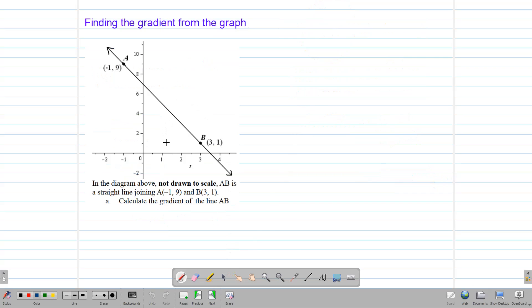Here in this question, we are asked to find the gradient of the line segment AB. All right, so what is the gradient of this? I'm going to first use the formula, since we have the two points. A is negative 1, 9, and B is 3, 1. I'm going to label them as x1, y1, and x2, y2. Notice, your formula will say y2, take away y1, over x2, take away x1.